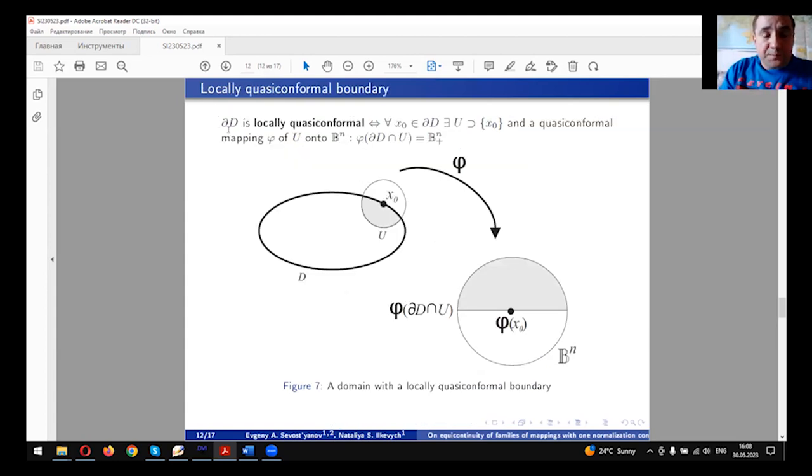Another definition concerns the properties of boundaries of domains. We say that the boundary of the domain D is locally quasi-conformal if for any point x_0 of the boundary, there is a neighborhood of this point and a quasi-conformal mapping of this neighborhood onto the unit ball B^n, such that the intersection of the boundary of the domain with this neighborhood maps onto the hyperplane.